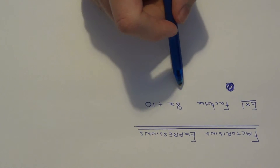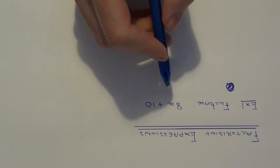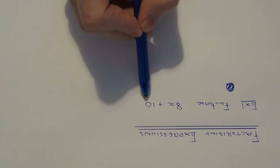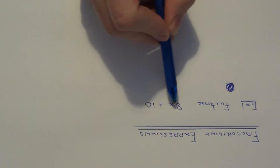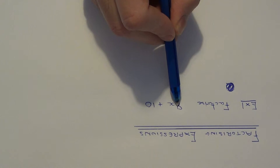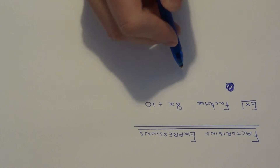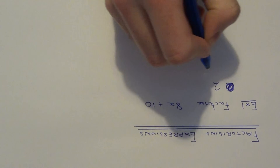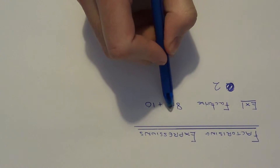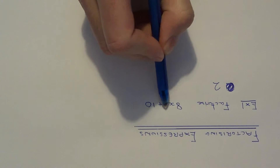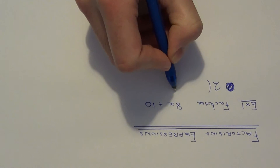If you are asked to factorise an expression you need to put the expression into a bracket. To do this, look at the terms you have and find the highest common factor of the numbers in both terms. In this case the highest common factor is 2, because it is the biggest number that goes into 8 and the biggest number which goes into 2. So put this at the start of your expression. The next thing is to look for letters which we have in both terms which are the same. We haven't got any letters which are the same, so we can just go straight to our bracket this time.